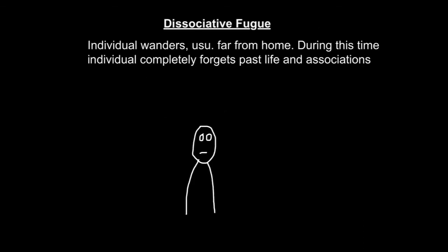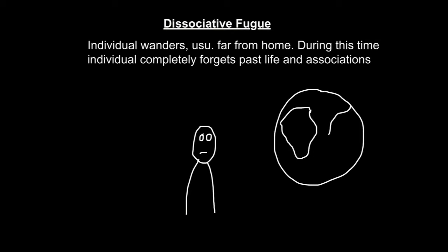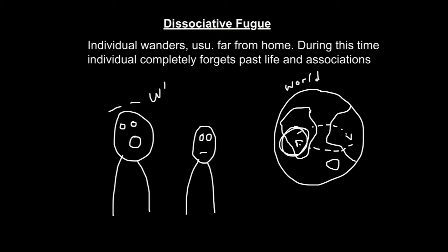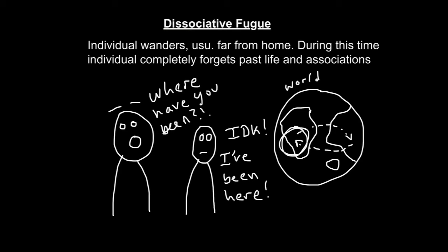In dissociative fugue, the individual wanders, usually far from home, for days, weeks, or months at a time. During this period, the individual completely forgets their past life and associations. Unlike individuals with amnesia, they are unaware of having forgotten anything. When they return to consciousness, they do not remember the fugue. Theoretically, the patterns of dissociative amnesia are similar to those seen in conversion disorder, except the individual does not avoid some unpleasant situation by getting sick. Instead, the person does so by forgetting or repressing certain traumatic events or stressors.